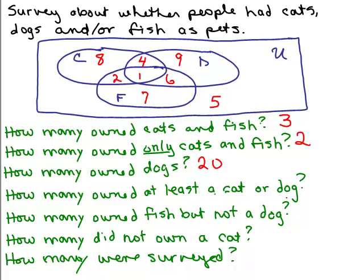How many owned at least a cat or a dog? They had a cat, or a dog, or both, or also fish — but it doesn't include the 5 people in the universe with no animals, and it doesn't include the 7 people who only had a fish. That leaves us with six numbers: 8, 4, 9, 2, 1, and 6. Adding those up: 10, 20 — I get 30. So there are 30.